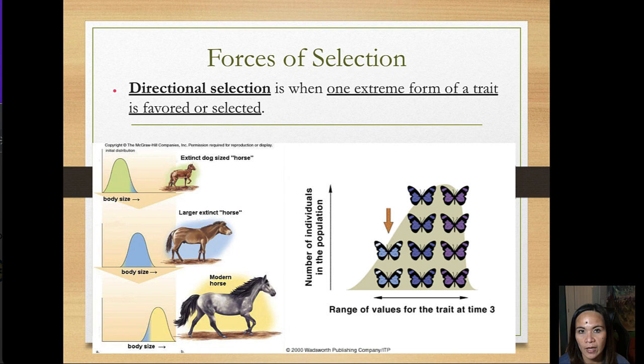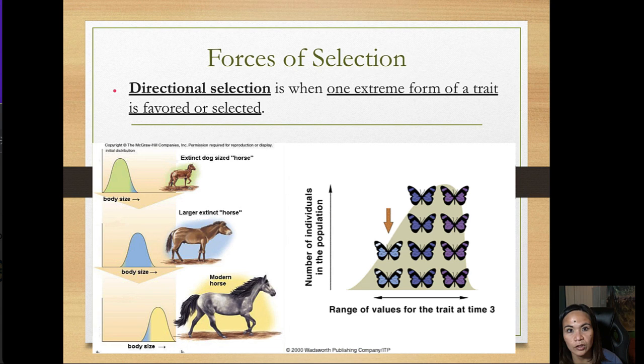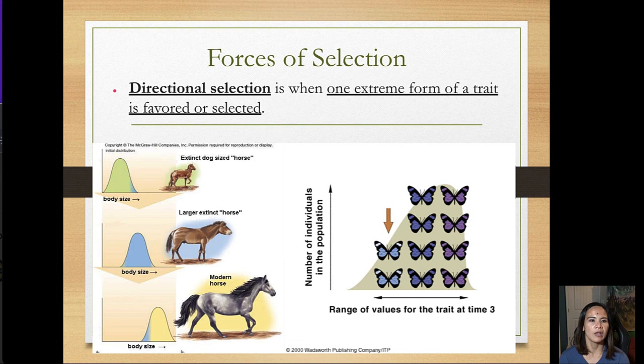Directional selection is when one extreme form of a trait is favored or selected. For example, if the modern horse's trait is favored, the population moves in the direction of that extreme form. Similarly, in the butterfly example, the most extreme form of the trait is favored and therefore becomes more abundant.